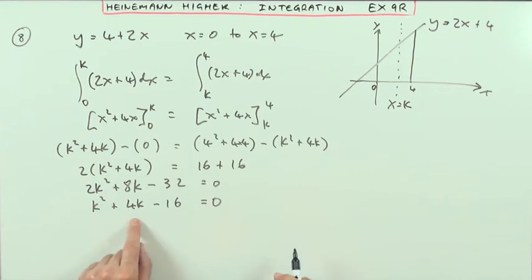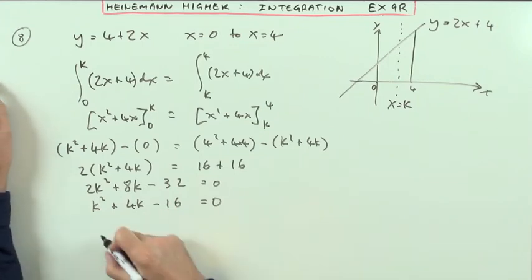Which looks very nice, until you realize it doesn't factorize, and I'm going to have to use the formula for this one. Factors of 16 with a difference of 4, so the formula.